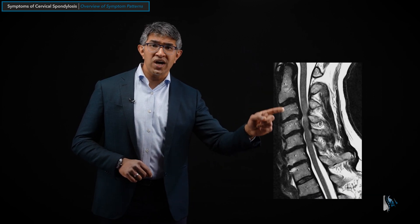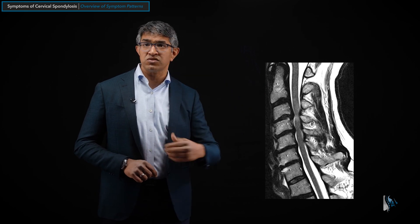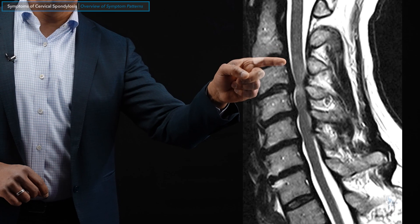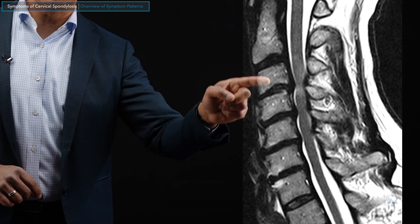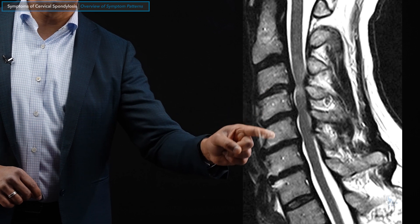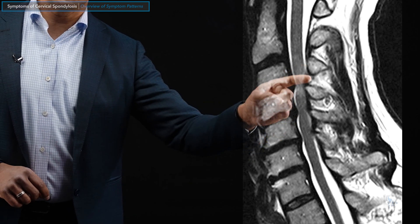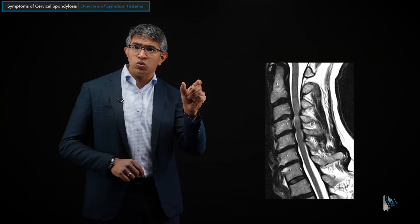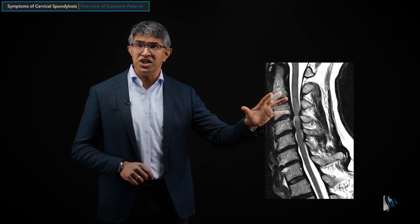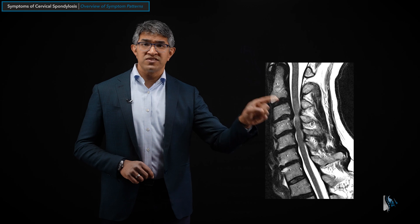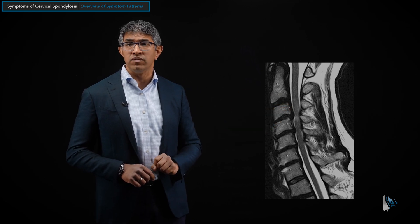This MRI scan shows some arthritic changes. This is a sagittal sequence. Here's some disc degeneration with some bulging at the C3-4 disc; C4-5 and C5-6 similarly have some disc material. There's some ligament thickening in the back, and the spinal cord is really being squeezed front and back by the arthritic or spondylitic changes. As a consequence, you can even see there's a little bit of swelling in the spinal cord at the C3-4 level.